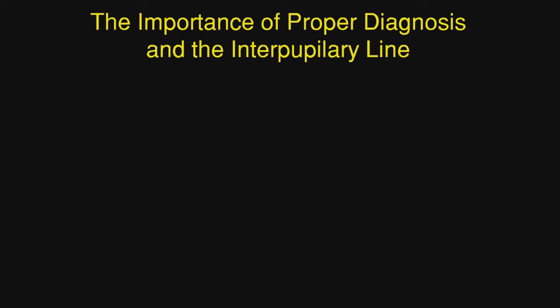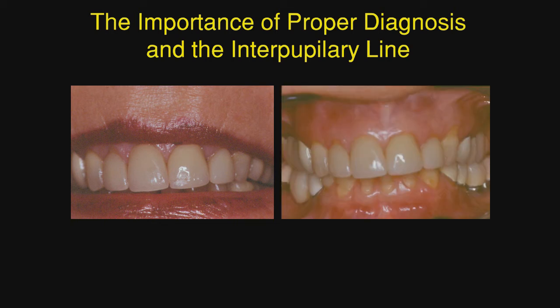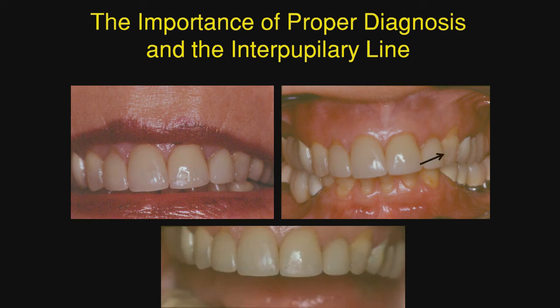The importance of proper diagnosis and the interpupillary line. This is a case that I initially misdiagnosed until the patient corrected me. Notice how the patient postures the lip. There was recession on that canine, and I said we need a coronally positioned flap to cover that recession. She looked at me quizzically and pointed to the lateral incisor, saying that recession doesn't bother her but this little tooth bothers her. We drew the interpupillary line, which is parallel to the gingival margin of the teeth, and she was exactly right — she needs crown lengthening done slightly on number 9 but significantly on number 10.